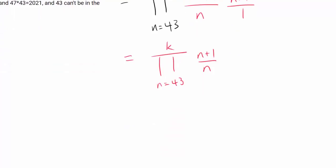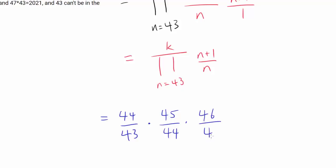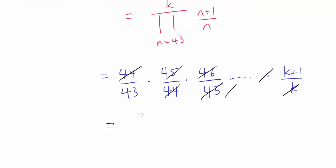This product is telescoping: when n=43 we get 44/43, when n=44 we get 45/44, when n=45 we get 46/45, and so on up to (k+1)/k. The intermediate values cancel — 44 and 44, 45 and 45, all the way through k — leaving us with (k+1)/43.